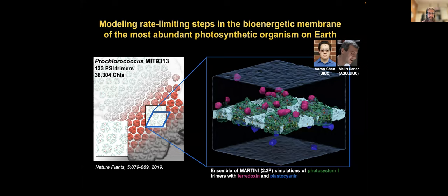And so this is studying what they call here the most abundant photosynthetic organism on earth, the Prochlorococcus. And the idea is to model the rate limiting steps in this energy producing system.